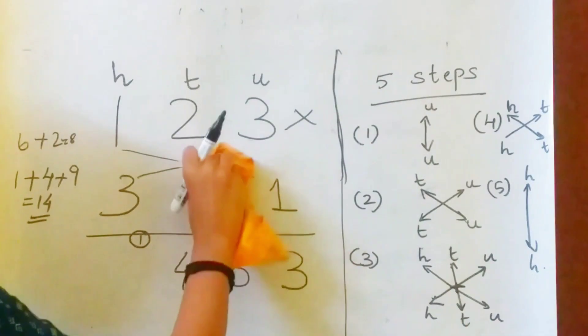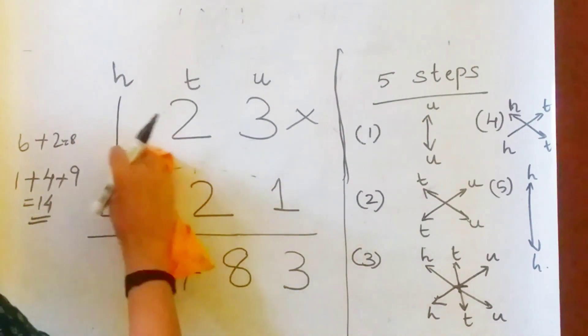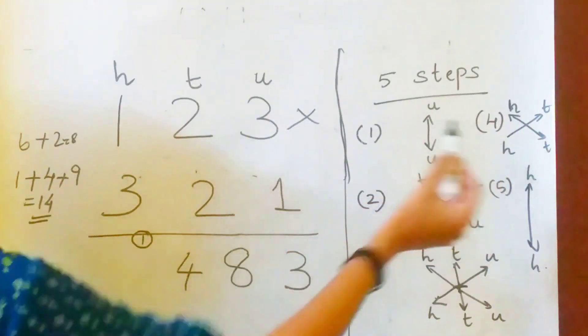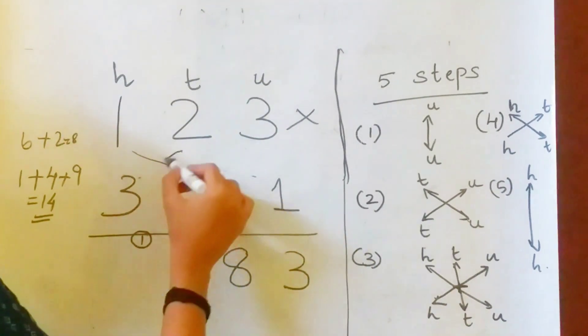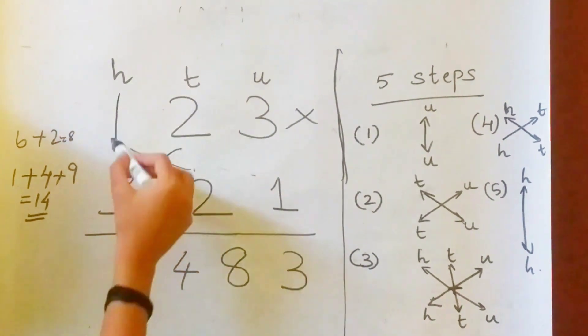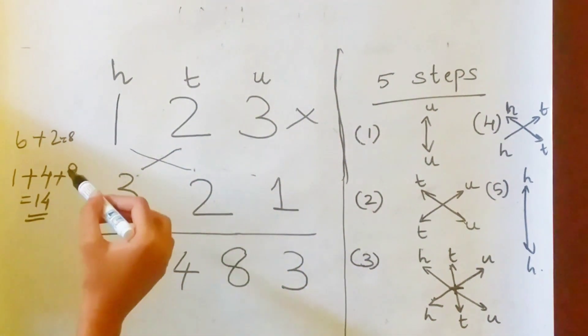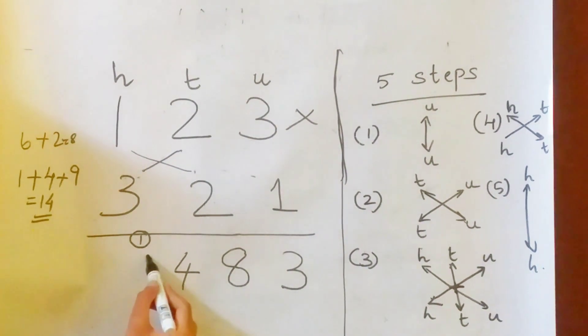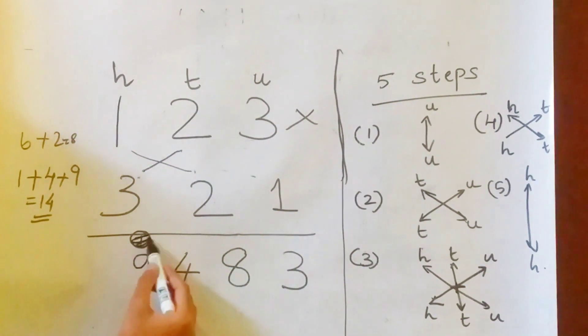Now the fourth step. What is the fourth step? We can see H into T and T into H. So 2 into 3, 6 plus 1 into 2, 2. So 6 plus 2, 8. Here we have a carry 1. So the answer is 9. 8 plus 1, 9.